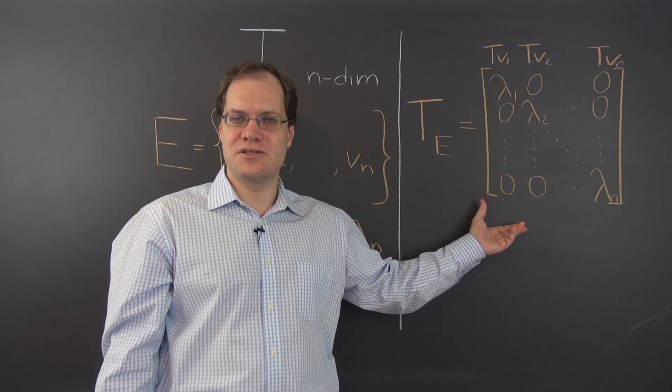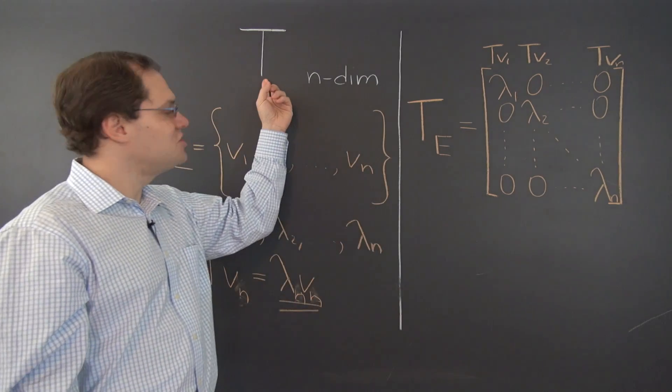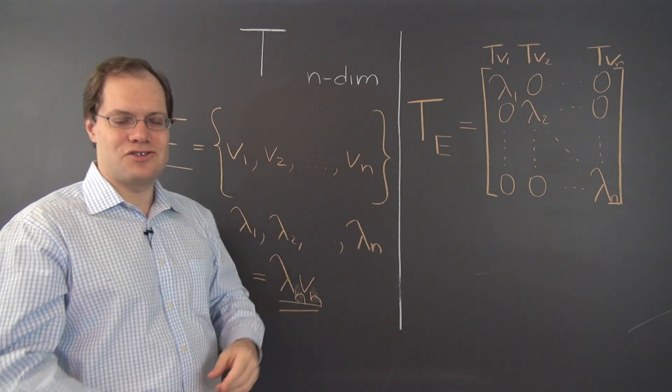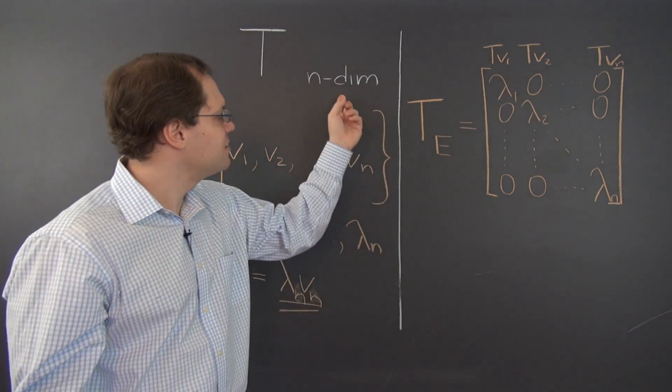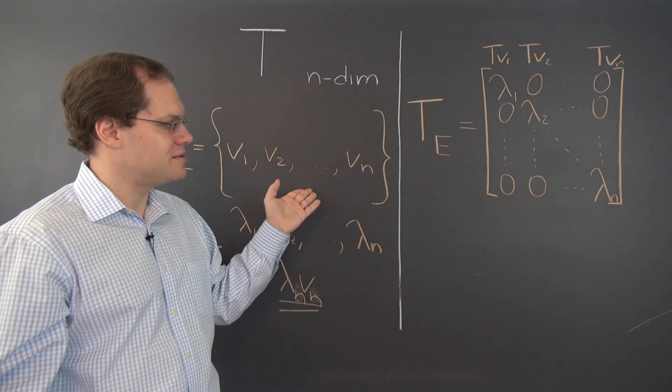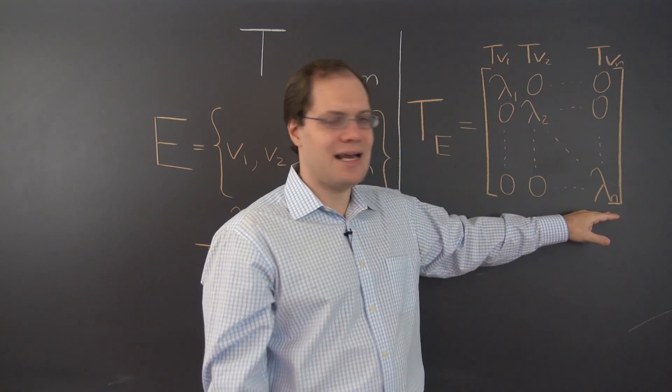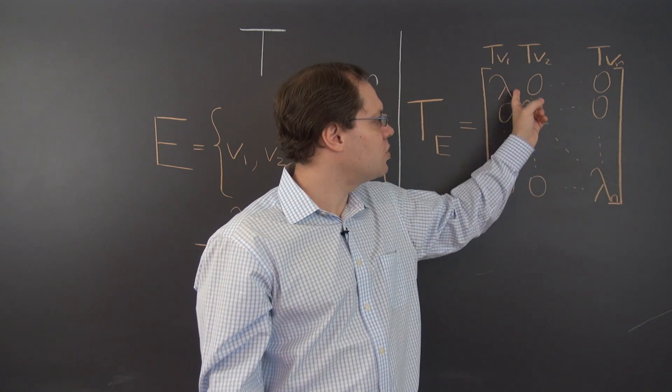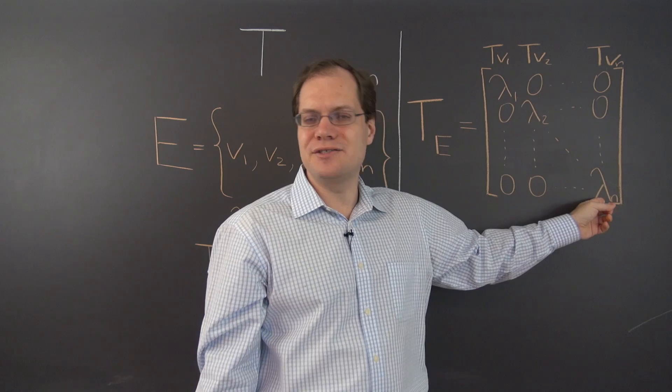We have constructed the matrix representing this general linear transformation in this totally general vector space of an arbitrary dimension n with respect to an eigenbasis. And the result is a diagonal matrix with the corresponding eigenvalues on the diagonal.